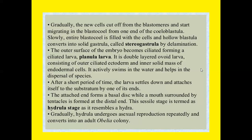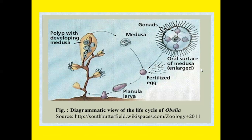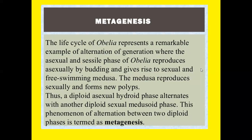After a short period, the planula larva settles down and attaches itself to a substratum by one end. The attached end forms a basal disc while a mouth surrounded by tentacles is formed at the distal end. This stage is termed the hydroid stage or hydroplastula, which functions as a hydranth. Gradually the hydranth undergoes asexual reproduction repeatedly and converts into the adult Obelia colony. The life cycle thus goes: male medusa and female medusa produce the fertilized egg, which develops into the planula larva, then into polyps bearing reproductive medusa buds.